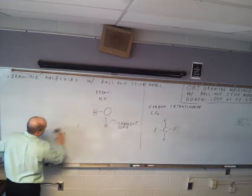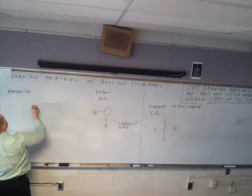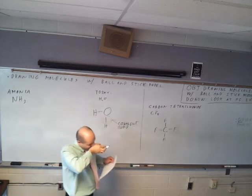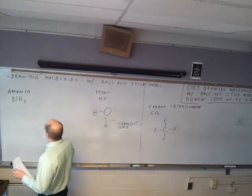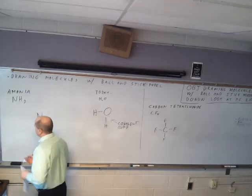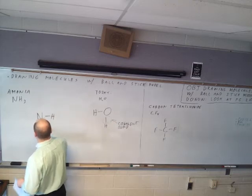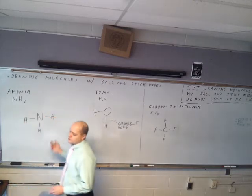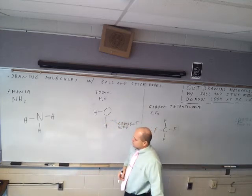Let's do ammonia, also known as nitrogen trihydride. What's going to go in the middle? Nitrogen — because there are three hydrogens and one nitrogen. For all the drawings I give you today, whatever there's one of, that's what goes in the middle. Then on any three sides you can put the hydrogens, and wherever you don't put them, we know there are two other electrons there filling up that space.